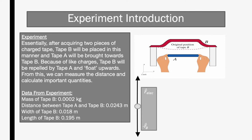The data from this experiment is shown below. The mass of tape B is 0.0002 kilograms, the distance from A to B is 0.0243 meters, and the width and length is 0.018 to 0.195 meters, respectively.